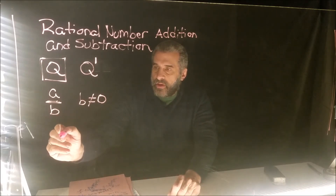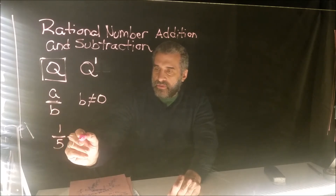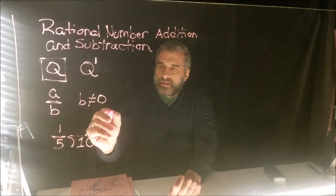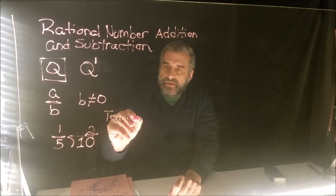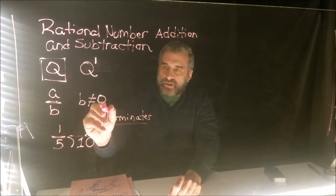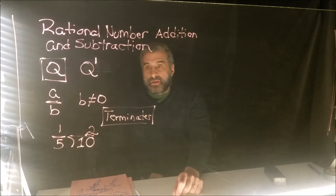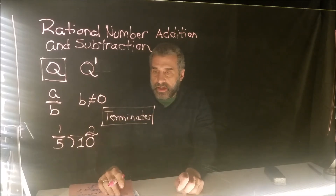For example, one-fifth is rational — it's a fraction and we can make it a decimal. Bring down the numerator: five goes into ten twice, giving us 0.2. Because it terminates, we know it's rational.